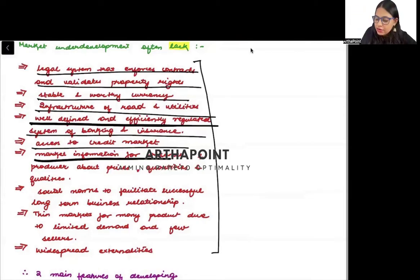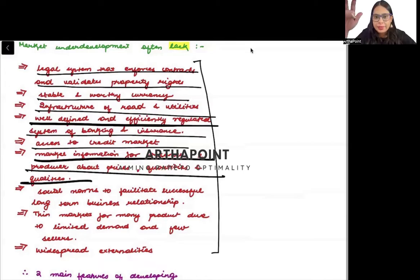Market information for consumer and producer about price, quality, and quantity. That means imperfect information. The information is still lacking.